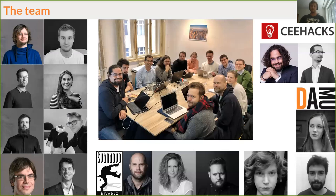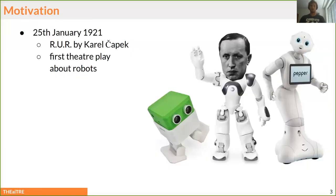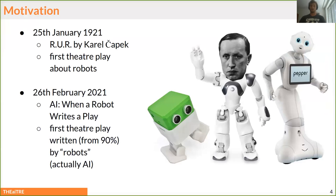Let's jump to the motivation behind the project. On the 25th of January, 1921, Karol Čapek wrote RUR, which is the first theater play about robots. And 100 years later, there's a play called AI: When a Robot Writes a Play, and it was the first theater play written by an algorithm — approximately 90% can be attributed to the algorithm.